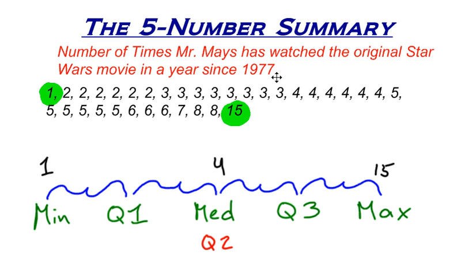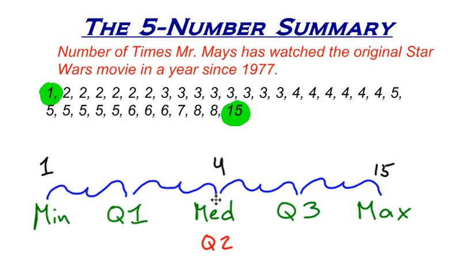We found that the median was four. Knowing where the median is is also important. As we count, there are 34 values. So if I go to the 17th value, there's going to be 17 numbers on the bottom half and 17 numbers on the top half. That's what the median is — the median splits your data set in half. Counting to the 17th value, right there is the middle of my data set.